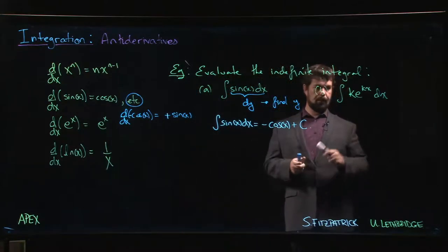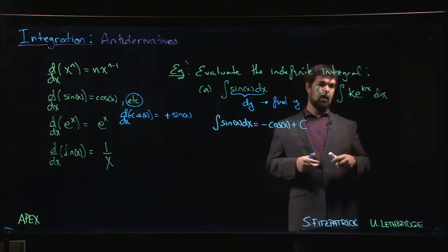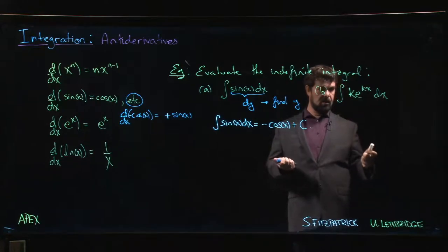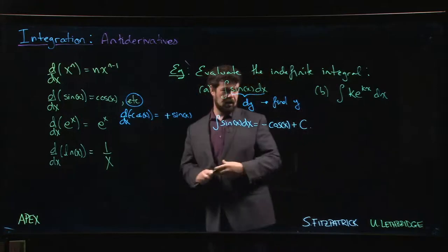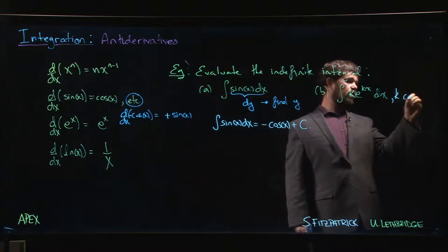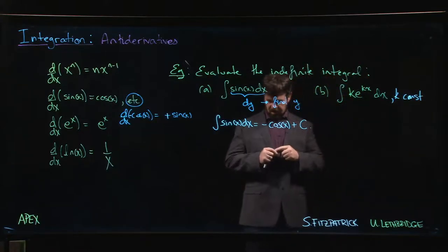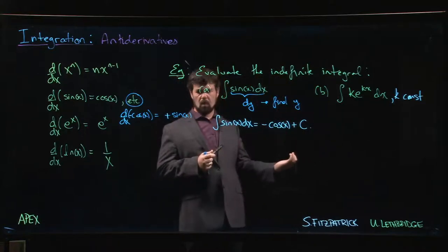Now here's one that maybe you have to think about a little bit more: k e^(kx)dx. What do we do with that? And here, of course, k is some constant. So we think back, all the way back to the chain rule chapter.